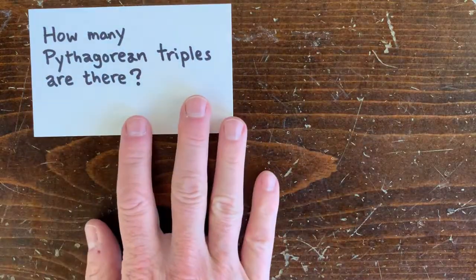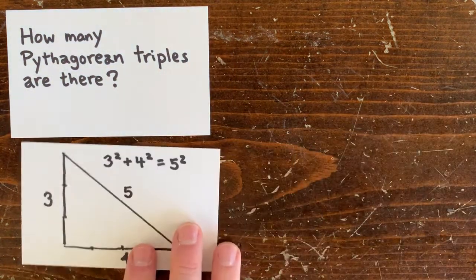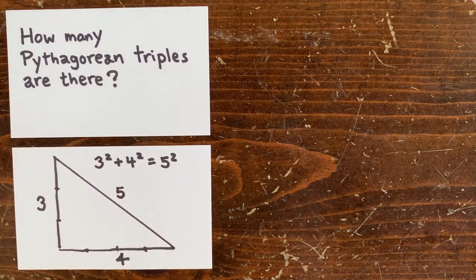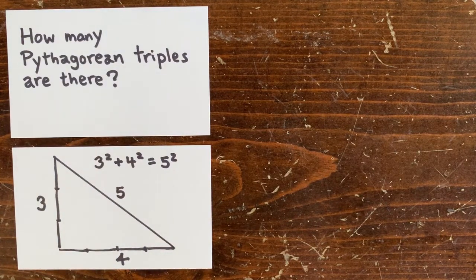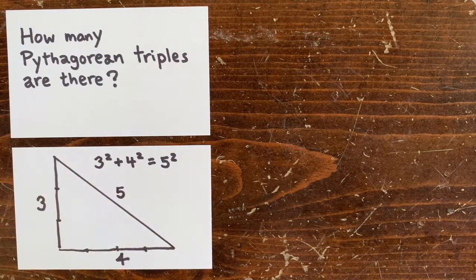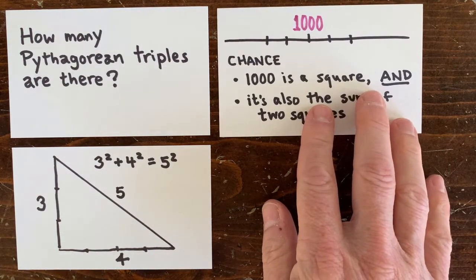Or take the Pythagorean triples, like 3 squared plus 4 squared equals 5 squared. That's pretty weird. Are there just a finite number of those, like in the first example we saw, or an infinite number? Let's see. We can make an estimate.